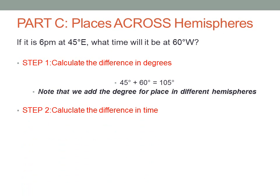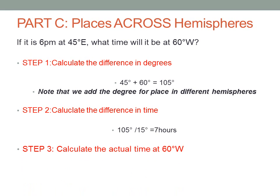Step 2, we are going to calculate the difference in time: 105 degrees divided by 15 gives us 7 hours difference in time. Step 3, calculate the actual time. The time at 45 degrees east is 6 p.m. What will be the time at 60 degrees west? Since we are going back to the west, we have to subtract. So we are going to subtract 7 hours from 6 p.m., which will give us 11 a.m. Note that we subtract as the time at 60 degrees west is behind that at 45 degrees east.